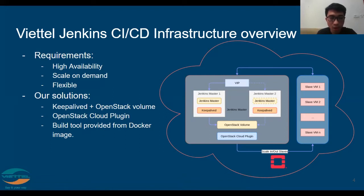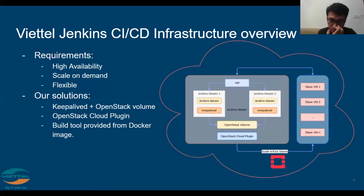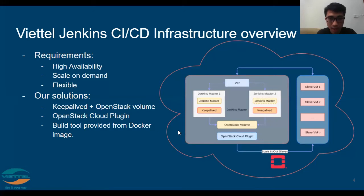The last requirement is flexibility. You may not install any build tool for any programming language on Jenkins slaves directly. Instead, when you write your Jenkins pipeline, put your code into a container. That container has your build tool installed and runs your build job. This is an overview of the Jenkins cluster architecture.